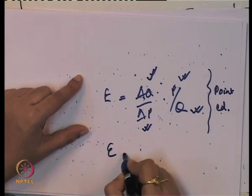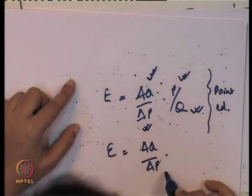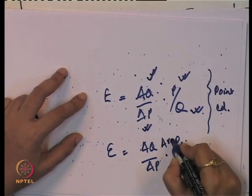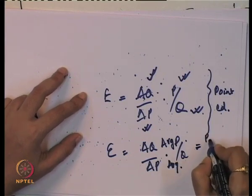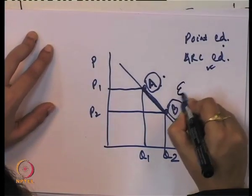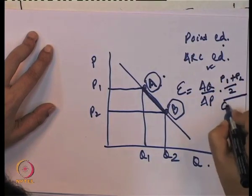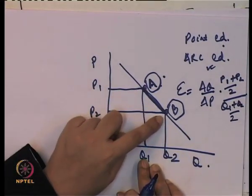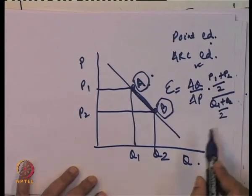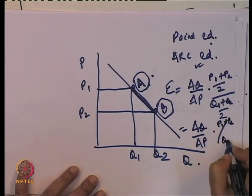When calculating arc elasticity of demand, the base formula remains the same — ΔQ/ΔP multiplied by P/Q — but since we are measuring over a segment, we use the average P and average Q between the two points. So the formula becomes: E = (ΔQ/ΔP) × (P1+P2)/(Q1+Q2). Because we are calculating between points A and B, we take the average price and average quantity as the reference values before the price change.